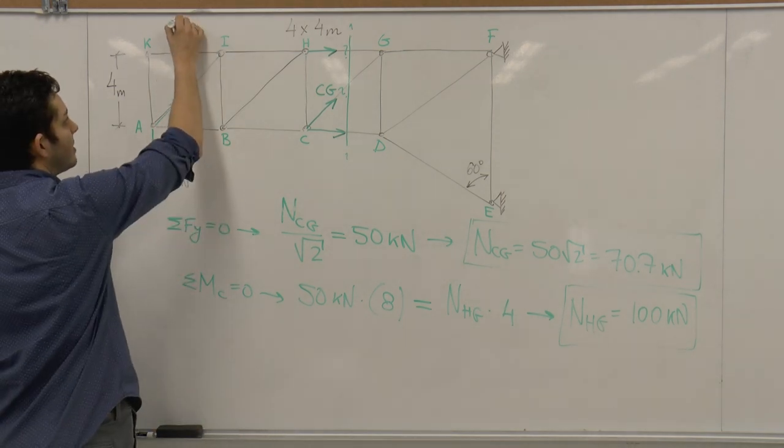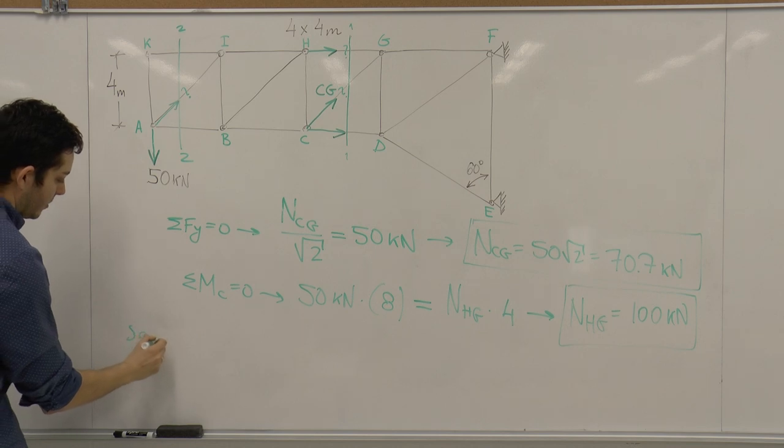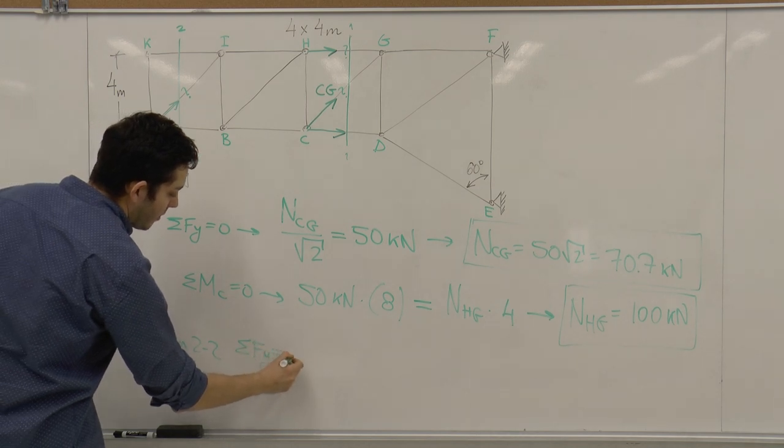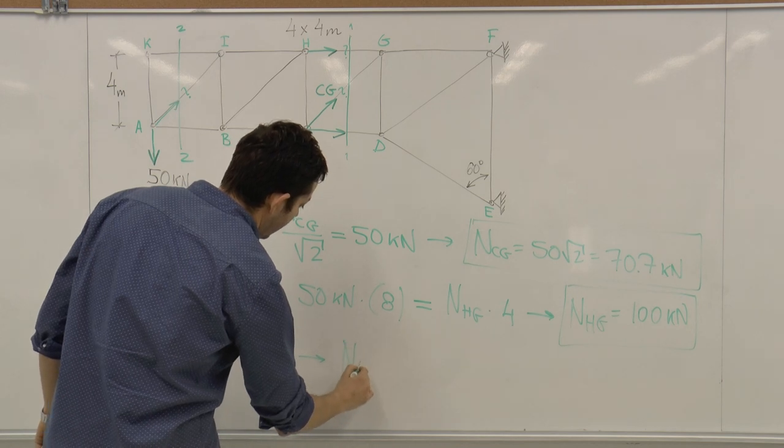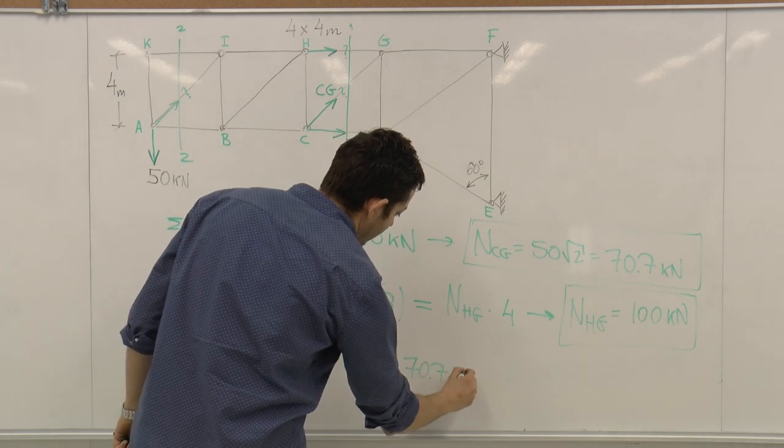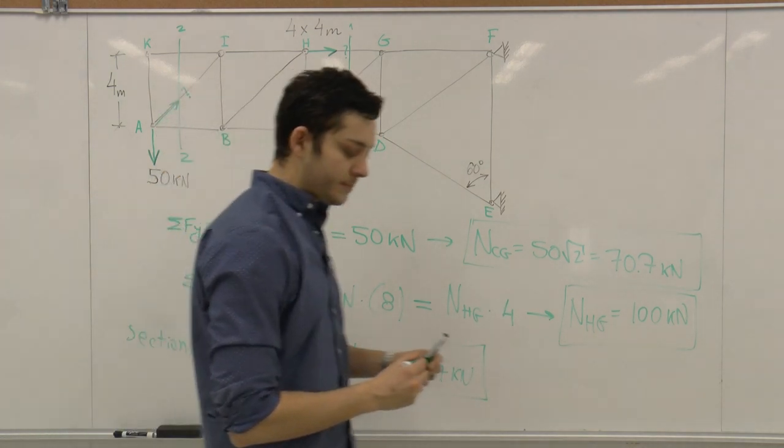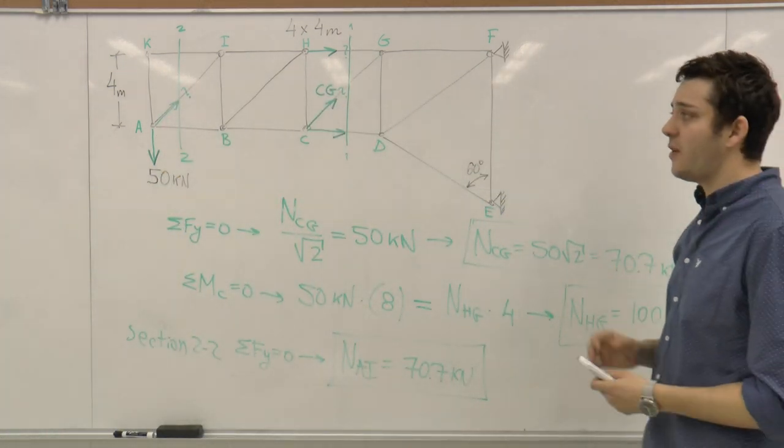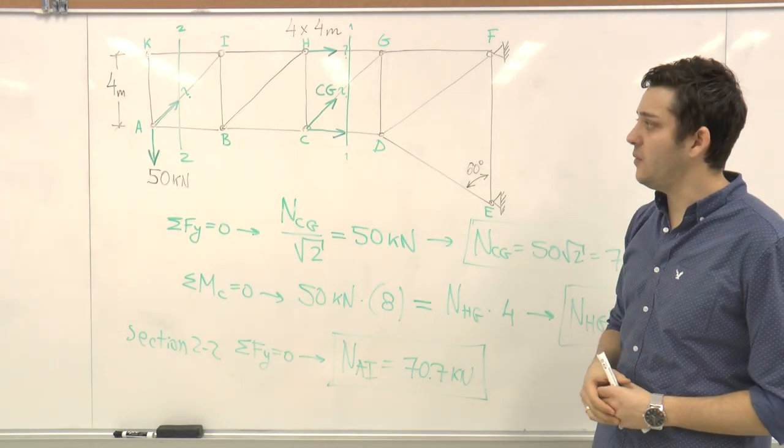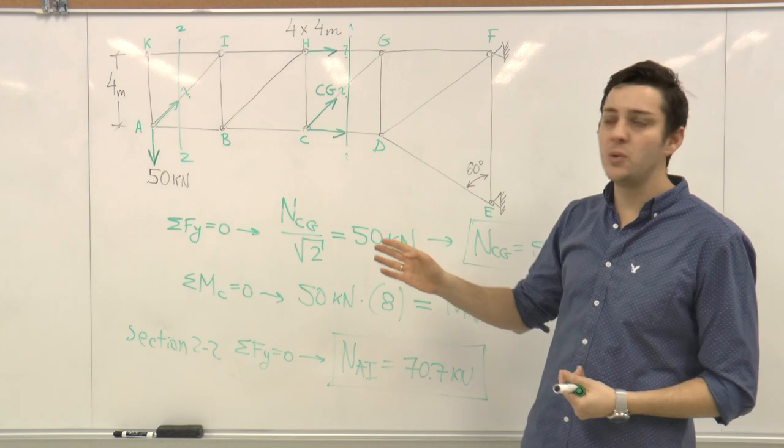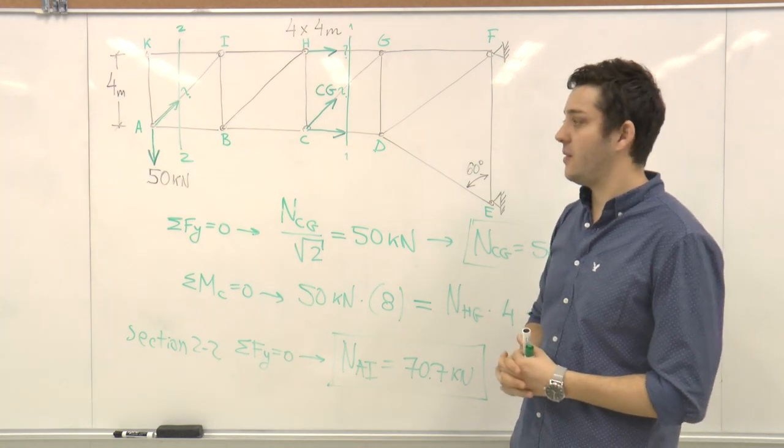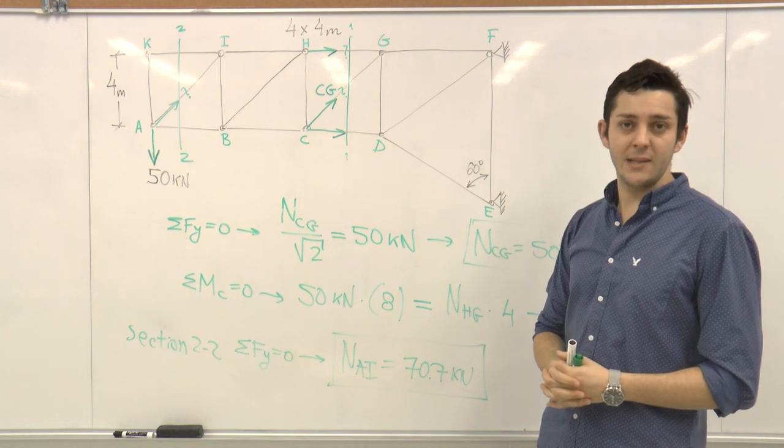This was section 1, this is section 2. From section 2, sum of the forces in Y direction will give us that NAI equals to 70 times square root of 2. This is a very good example where we don't need to calculate the reactions. And if we need to find only specific members, usually we'll try to use the method of sections to make a section along the unknown forces that we need to find. That's all. Good luck.